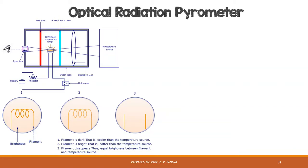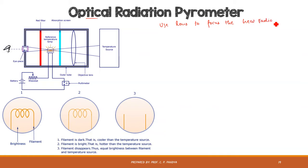Hello students, welcome to the video lecture of industrial instrumentation. Today we will be learning the last topic of unit number eight, that is optical radiation pyrometer. In the previous session we studied the total radiation pyrometer, which is not based on the principle of optics. Here we will be using lenses to focus the heat rays or heat radiations on a lamp, as well as an eyepiece lens for observation — that is why this is known as an optical radiation pyrometer.